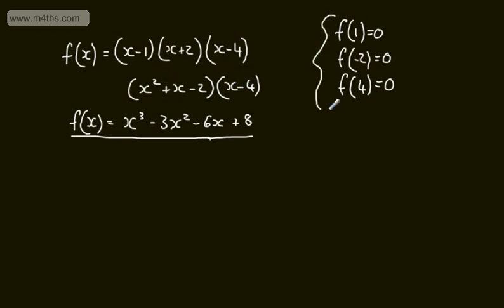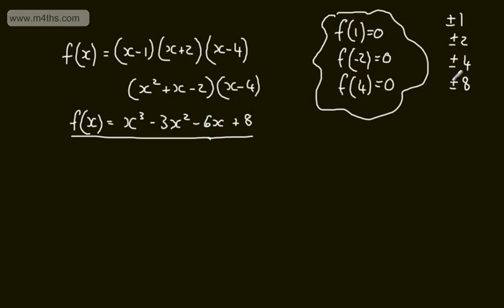With 8 as our constant, we would look to test f of plus or minus 1, plus or minus 2, plus or minus 4, and plus or minus 8. We systematically go through those values trying to find one that gives f(a) equals 0. Once we have that, we have a linear factor.